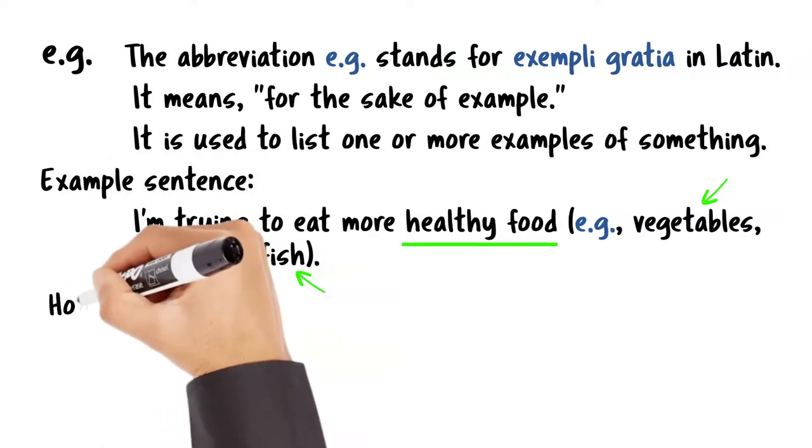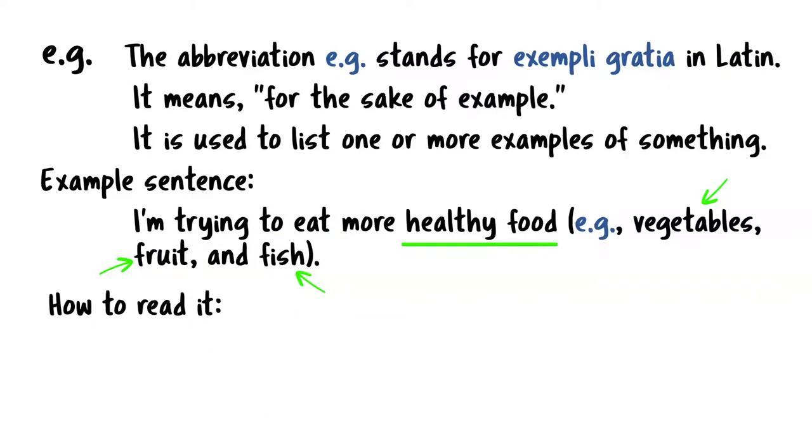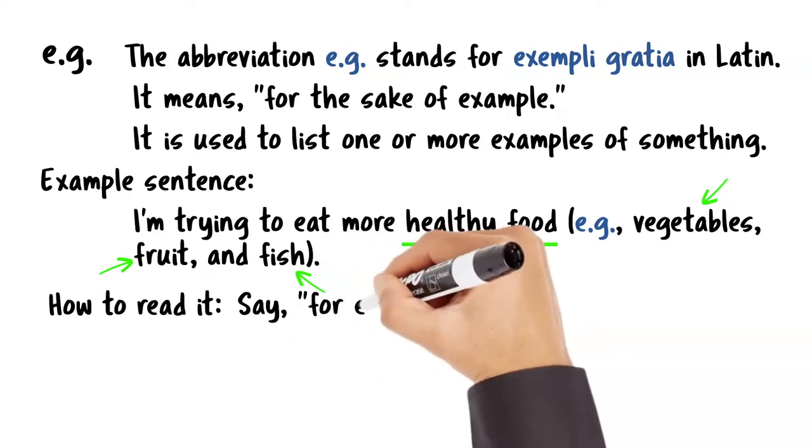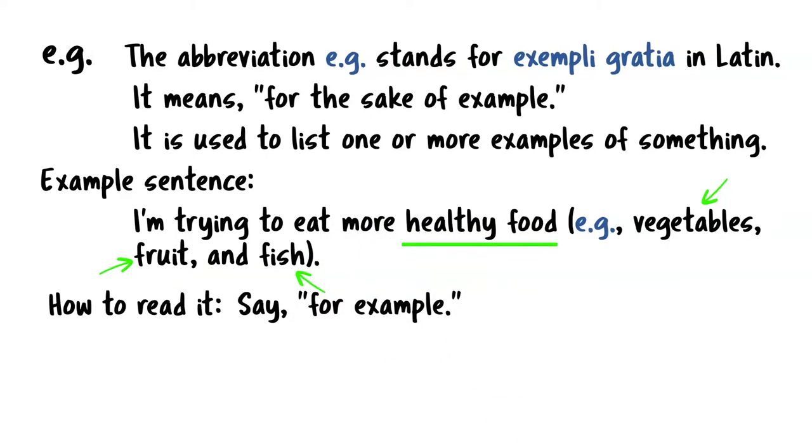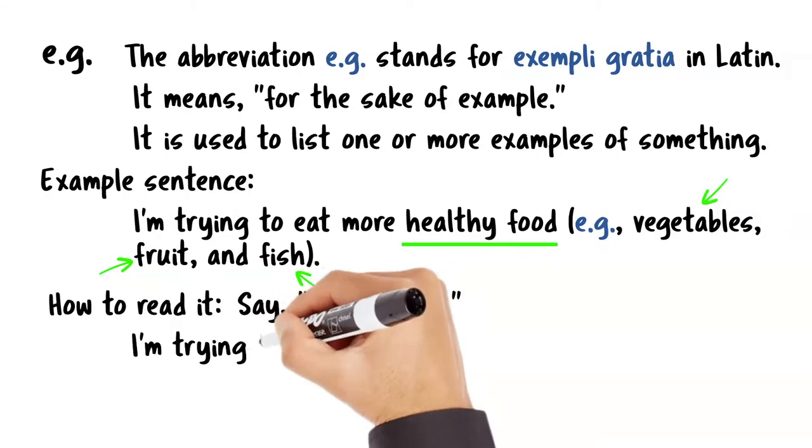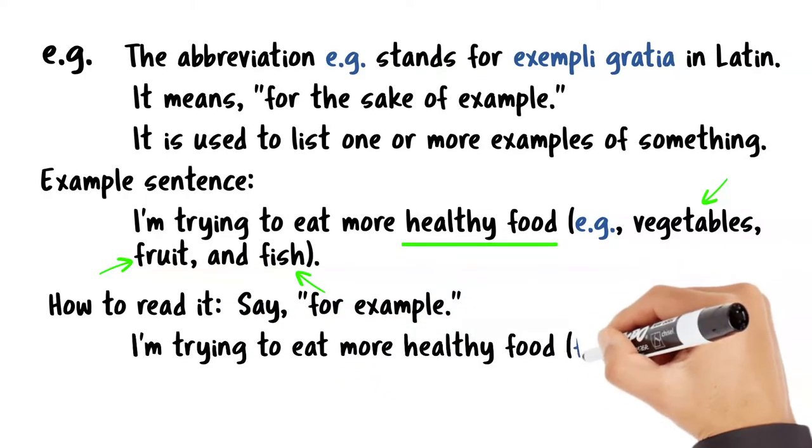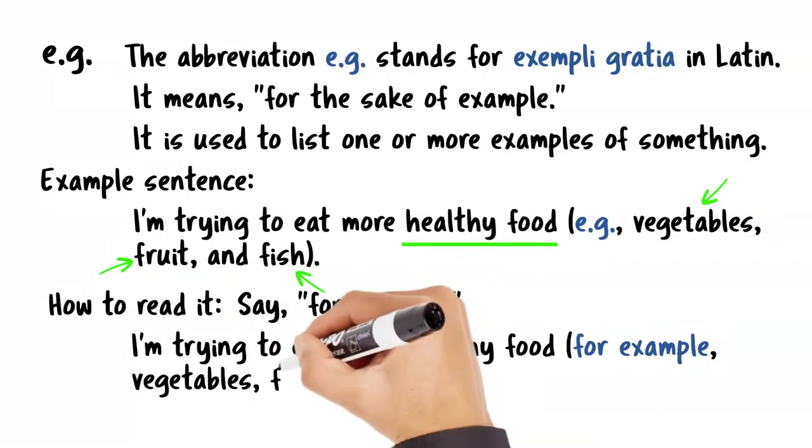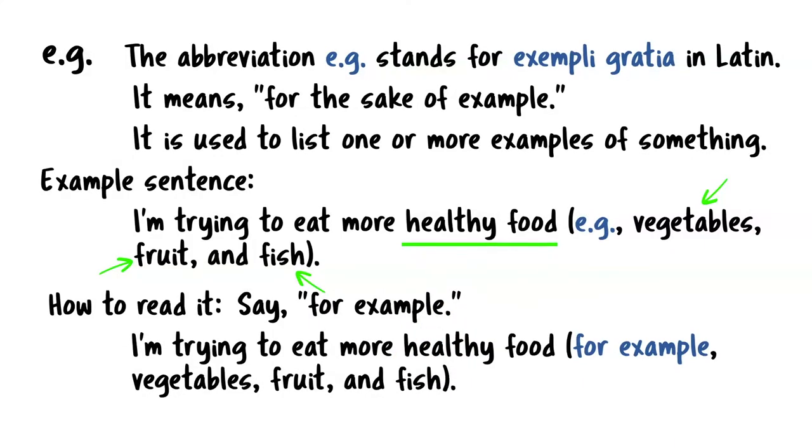We never read E-G in its Latin form, exempli gratia. It is much easier and clearer to say for example. So you would read this sentence as, I'm trying to eat more healthy food. For example, vegetables, fruit, and fish.